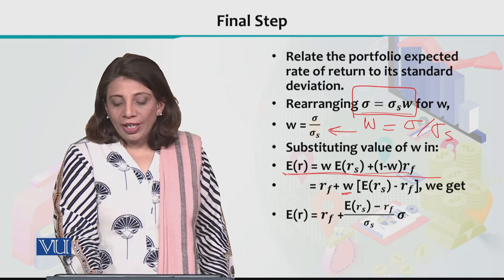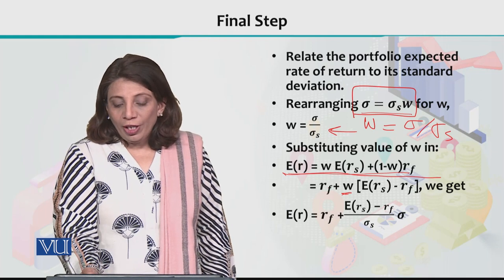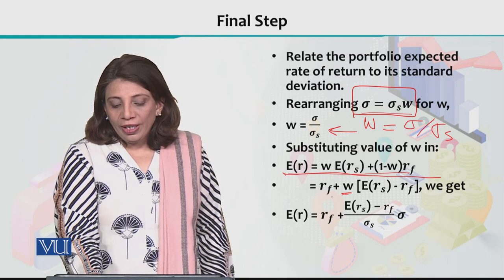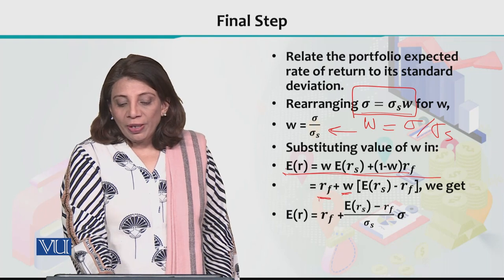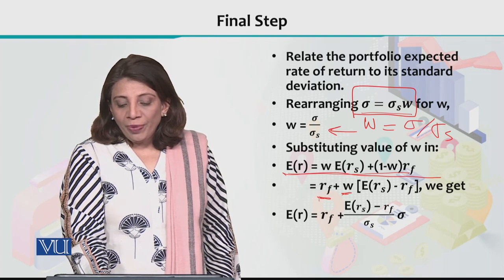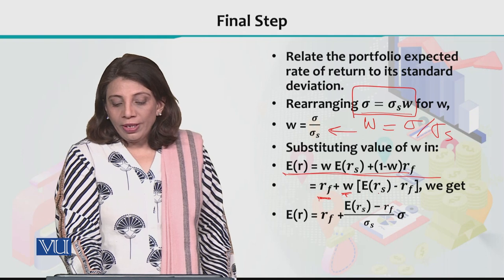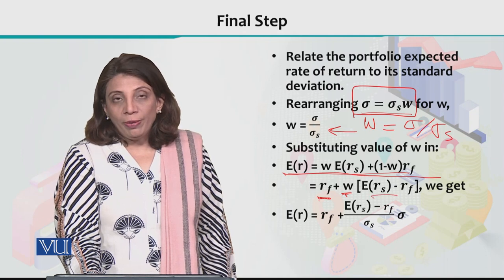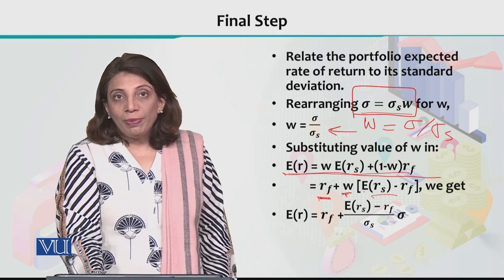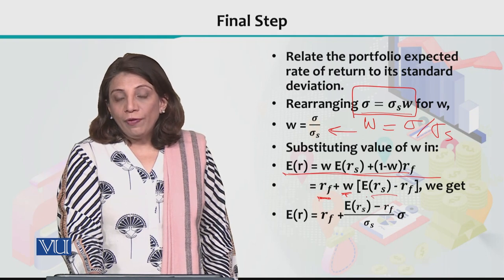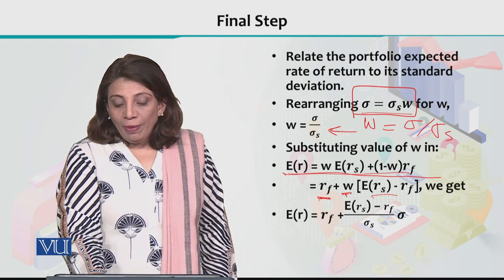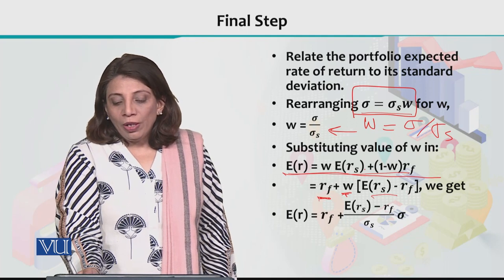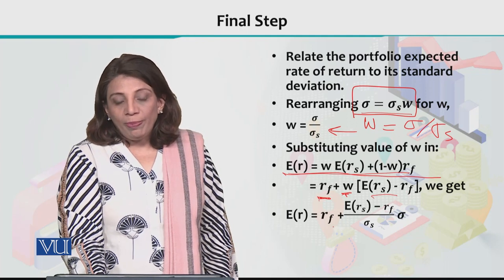We now substitute the value of W into the expected return equation. The expected rate of return equals the risk-free return plus W times the risk premium, where the risk premium is the expected rate of return from the risky asset minus the risk-free rate. Replacing W with Sigma over Sigma S allows us to rewrite the equation in terms of sigma.